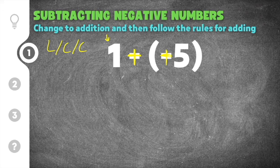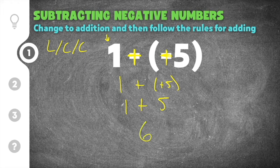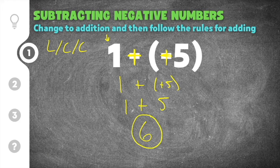I'm going to rewrite this so it's a little bit easier to see. We have one plus positive five. Both of these are positive, so you just add them together and keep the sign. One plus five is six. This is a positive one and a positive five, so our answer is going to be a positive six. That's your solution to this first problem.